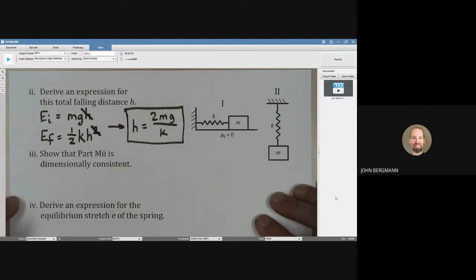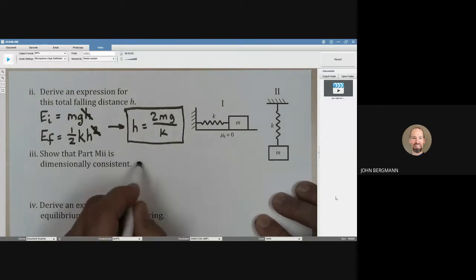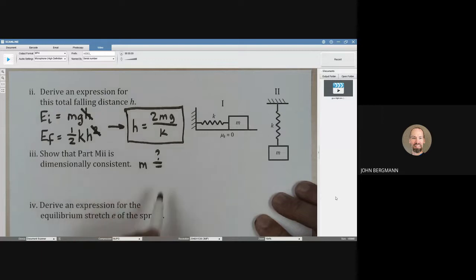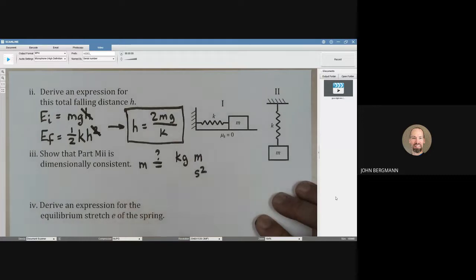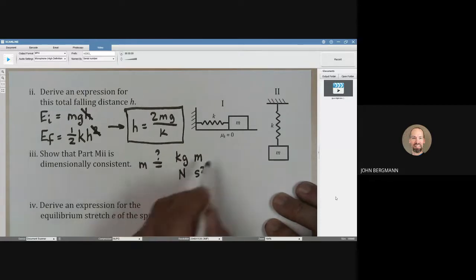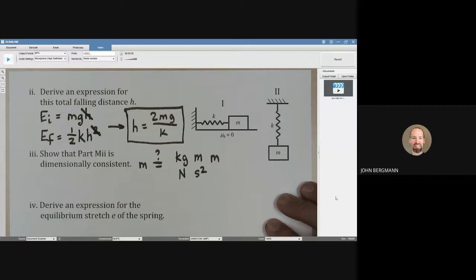Let's show that part M2 is dimensionally consistent. So do the units match here? H is in meters, right? The question is, is that equal to what's on this side? Over here, we've got mass, which is kilograms. G is the acceleration due to gravity, which is meters per second squared. And then the spring constant K is newtons per meter. Now, do those match up? Let's see.